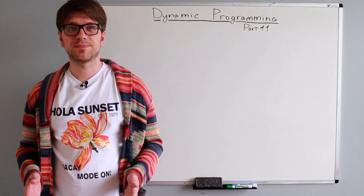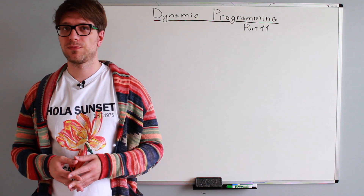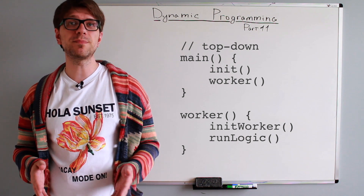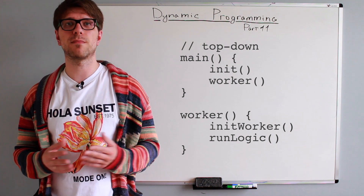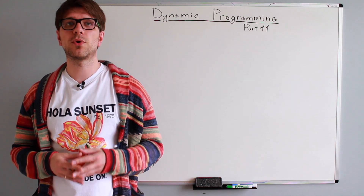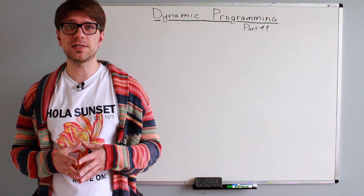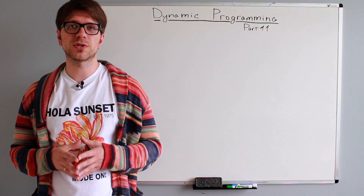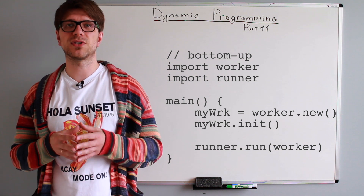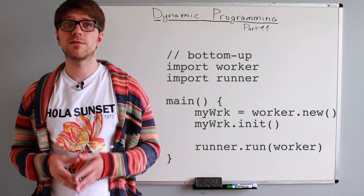Now let's get back to computer science. In the software development process, top-down and bottom-up approaches play a key role. Top-down approach is based on planning and a complete understanding of the system — implemented by attaching stubs in place of modules, with individual subcomponents implemented later. It's more suitable when the software solution needs to be designed from scratch and specific details are unknown. Bottom-up approach works in the exact opposite way: you start by taking small components and assembling them into a desired system, and it's more suitable when a system needs to be created from existing components.